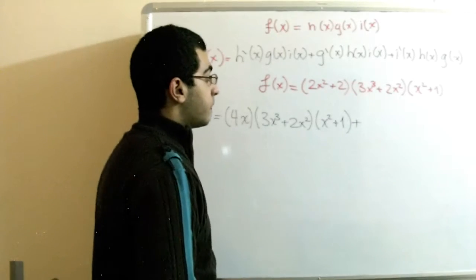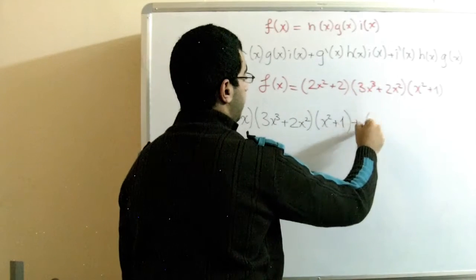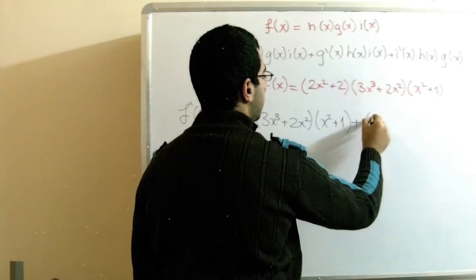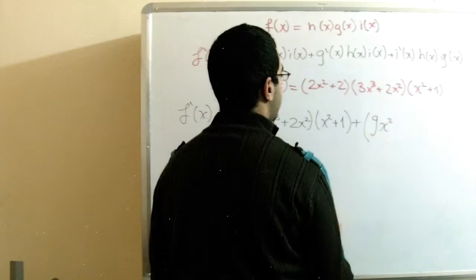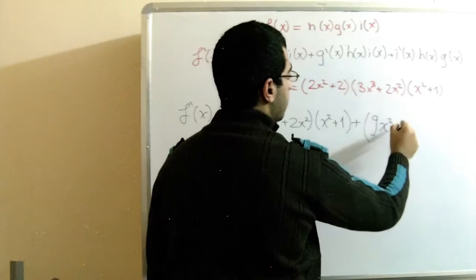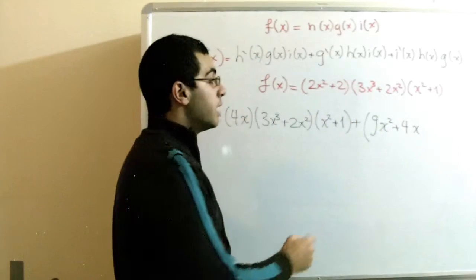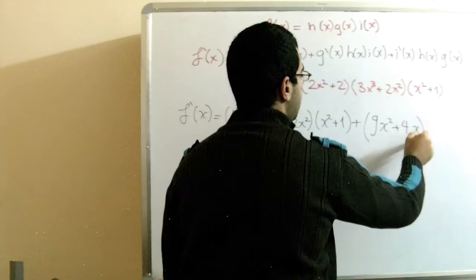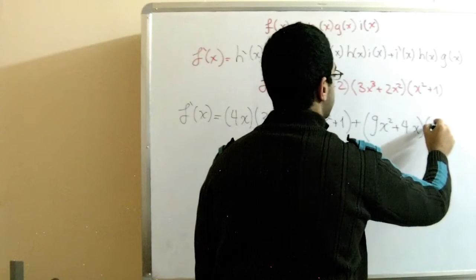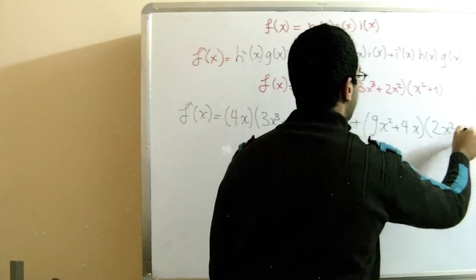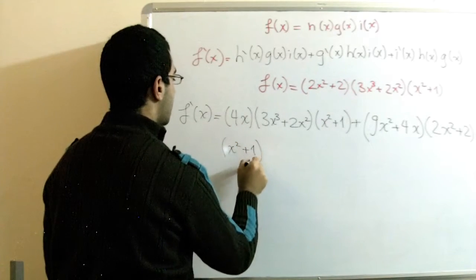Next, we move to the second bracket and take its derivative. We bring the 3 down: 3×3 = 9, and 3 minus 1 gives x². For the next term, 2 times 1 gives 2, and the power 2 minus 1 gives x. So the derivative of the second bracket is (9x² + 4x). Then we drop the rest as they are: (2x² + 2)·(x³ + 1). Plus.